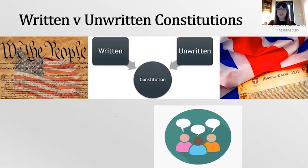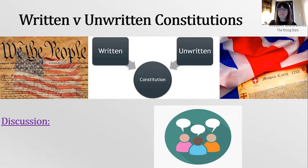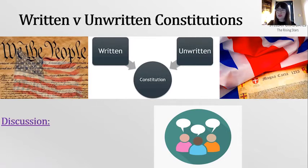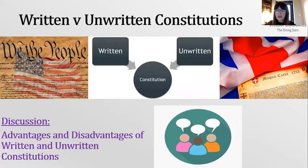Having given that brief outline of written and unwritten — or as we now know, uncodified — constitutions, we're going to have a debate about the advantages and disadvantages. In an unwritten constitution, because there are so many documents, they could juxtapose or oppose each other, causing confusion. Something constitutional in one place could be unconstitutional in another, making it harder to make decisions. Exactly — two provisions could conflict and it's not as clear as it would be in a written constitution.